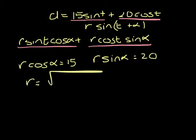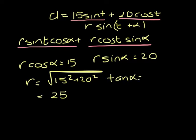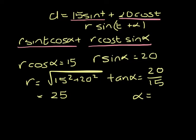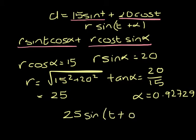r will be the square root of 15 squared plus 20 squared, which gives us 25. And tan α will be 20 over 15, so α is 0.92729. So we can say that we have 25 sin(t + 0.927) to 3 sf. You have to be really careful — this angle must be in radians.